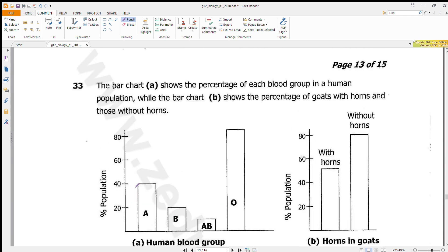The next question, which is 33, says the bar chart shows the percentage of blood of each blood group in human population.